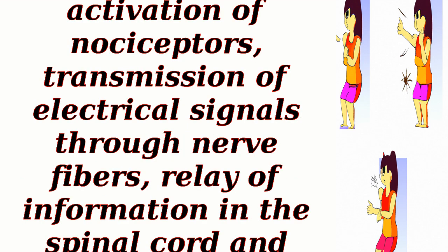In summary, pain perception is a complex and dynamic process involving the activation of nociceptors, transmission of electrical signals through nerve fibers, relay of information in the spinal cord and brain, modulation by various factors, and the subjective interpretation of pain experiences.